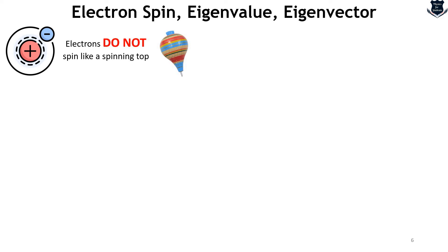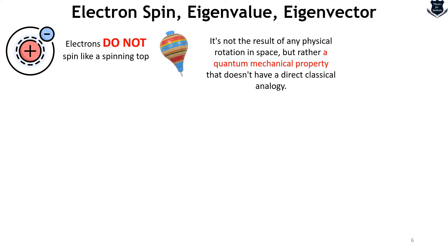The first thing you need to understand is that typically when we talk of the spin of an electron, it does not actually behave or spin like a spinning top. An electron spin does not mean that it literally rotates like a spinning top. The term spin in quantum mechanics is a bit misleading because it suggests a classical picture of a particle physically rotating on its own axis, which is not the case for electrons or subatomic particles. Spin is a very intrinsic property — electron spin is a fundamental intrinsic form of angular momentum built into the nature of the particle, not the result of any physical rotation in space, but rather a quantum mechanical property.